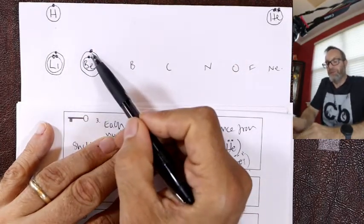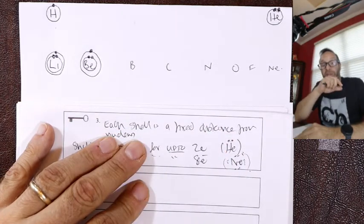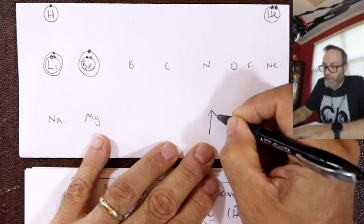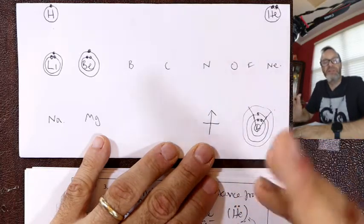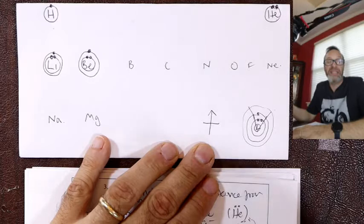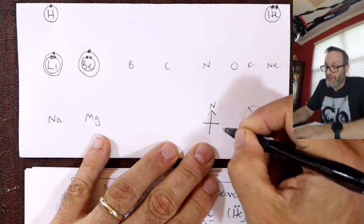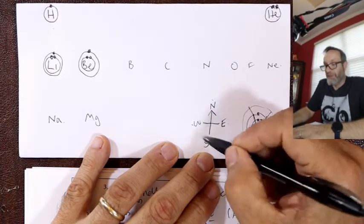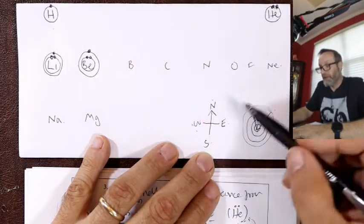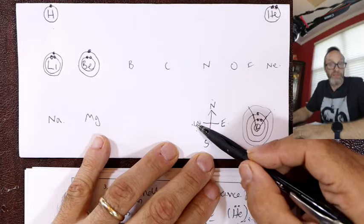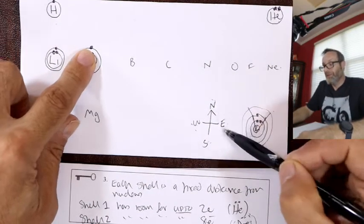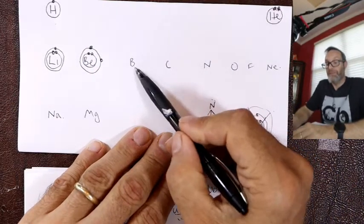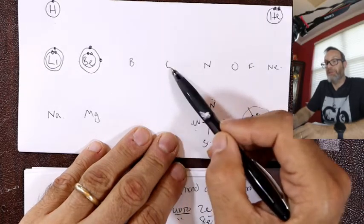As we did with lithium, the first electron in the outer layer goes to the north position, think of the points of a compass — never eat shredded wheat — north, east, south, west. For beryllium there's one more electron after north, so we go east. Beryllium has two on the outside. Boron, three on the outside. Carbon, four on the outside — just pause there and fill up the carbon.